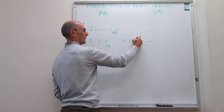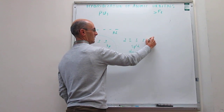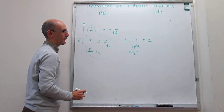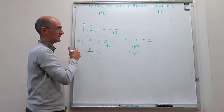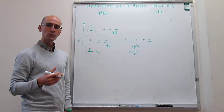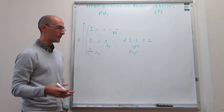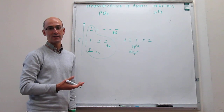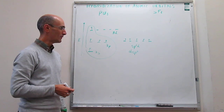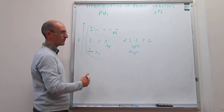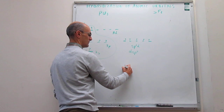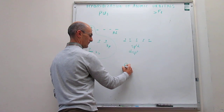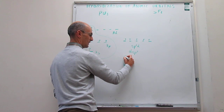Each one of the five sp3d hybrid orbitals will have one electron, and therefore you can form five sigma bonds with terminal atoms like chlorine. If you choose the right linear combinations of these orbitals, you can come up with a trigonal bipyramidal shape. So this will be phosphorus, and then you will have here one of the hybrid sp3d orbitals.